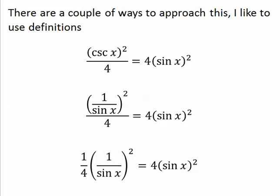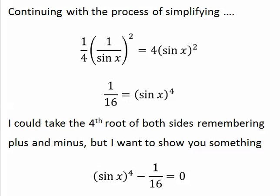There are a couple of ways to approach this. I like to use definitions, so just take everything back to its basics. Cosecant squared is 1 over sine x squared. And then just do a little manipulation.